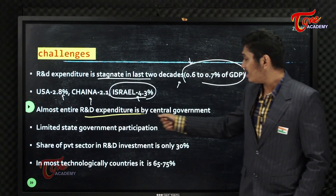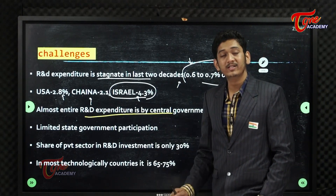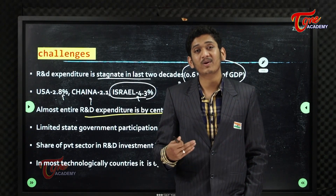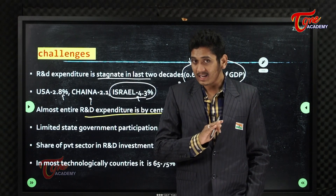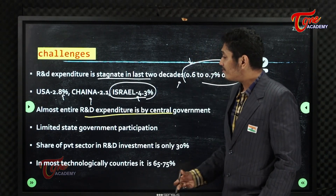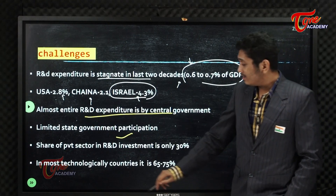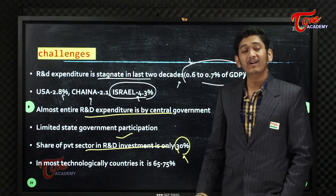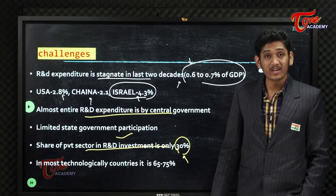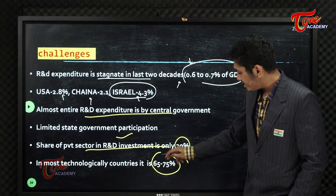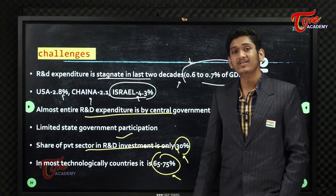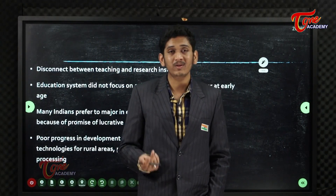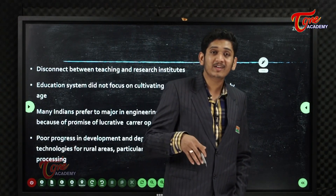Almost the entire R&D expenditure in the country comes from the central government, because state governments have a limited role in science and technology. The share of the private sector in R&D investment is only 30%, whereas in developed countries like the US, the private sector is heavily involved in research and development.